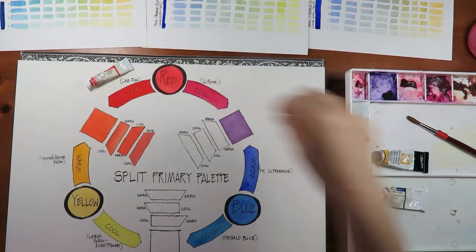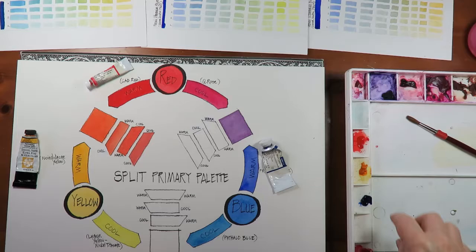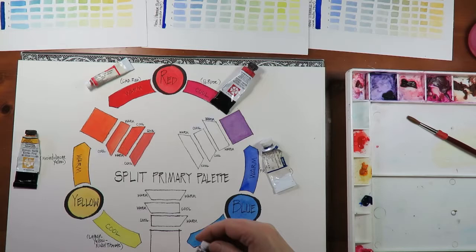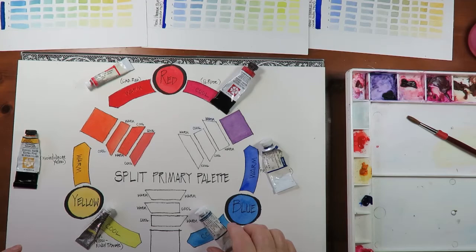Now, these are the paints I'm using. I've got Winsor-Newton cad red, a Daniel Smith permanent yellow deep for our warm yellow, French ultramarine for our warm blue, and I put them on my palette for all the warm colors up here, and then the cool colors. I've got my quinacridone rose. That's Daniel Smith. I've got a Winsor-Newton lemon yellow, and also Winsor-Newton Winsor blue, they call it. It's a phthalo blue.